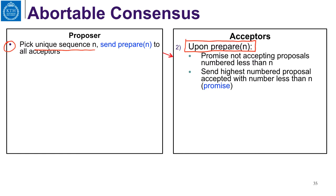Now, each acceptor, upon receiving a prepare with number n, promises not to accept any more proposals with a number less than n. They freeze the state, basically. Each one sends back the highest-numbered proposal it has accepted with number less than n — that value v. They freeze the state between that highest proposal number m and number n.